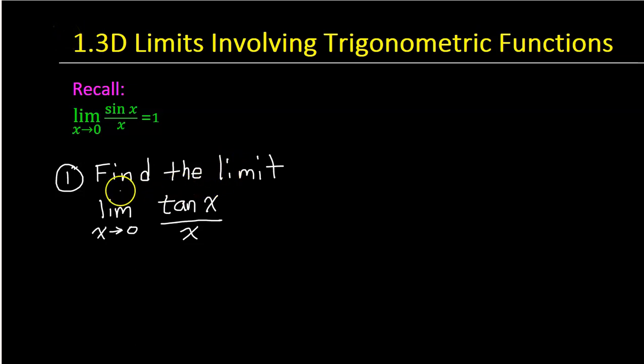In this video, I'm going to show you two examples of how we find limits involving trigonometric functions. In the previous video, we proved that the limit of sin(x) over x as x approaches 0 is equal to 1. But at this point, I would like you to memorize that fact, and we're going to use that to find the limits of other trigonometric functions.